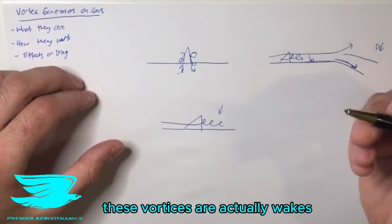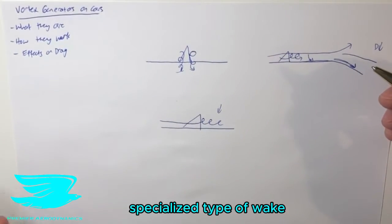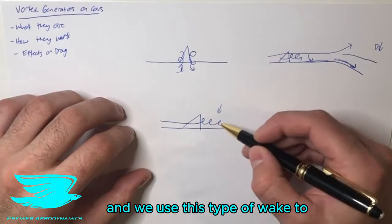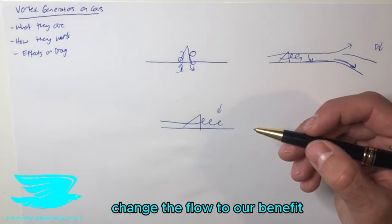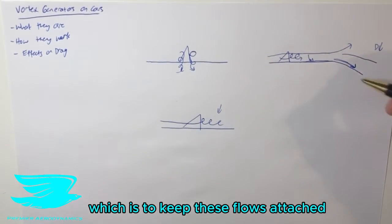These vortices are actually wakes when you think about it. They're just a very specialized type of wake. We use this type of wake to manipulate the flow to our benefit, which is to keep these flows attached.